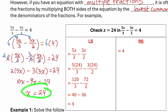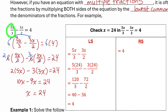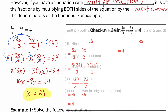You can check that answer of 24 in the original equation by substituting 24 in for both of the x's. If we substitute it in, we get 40 minus 36, which is 4. So x equals 24 is the correct answer.